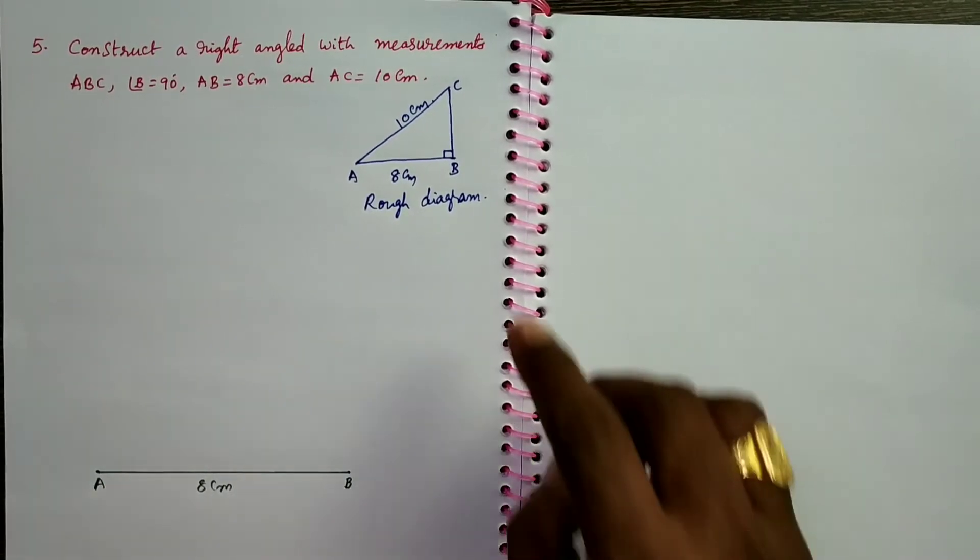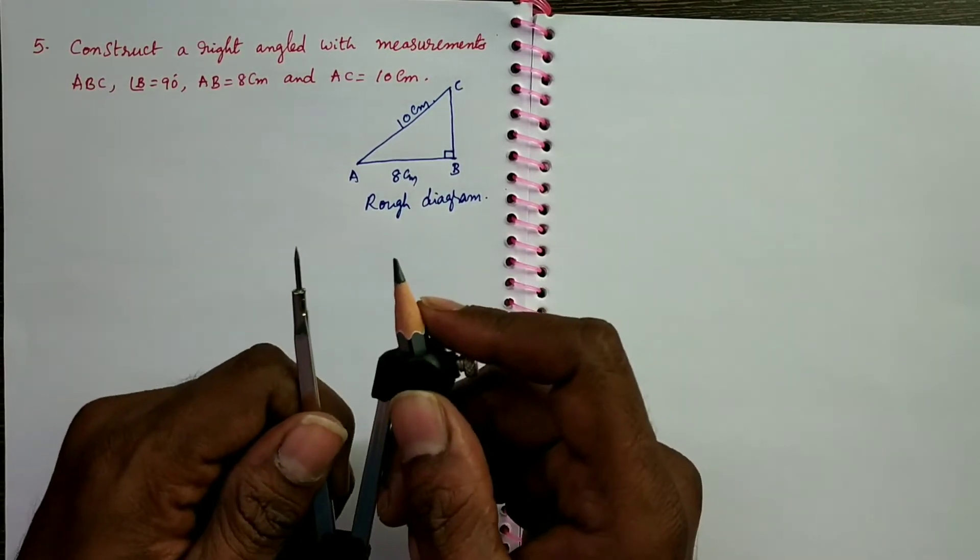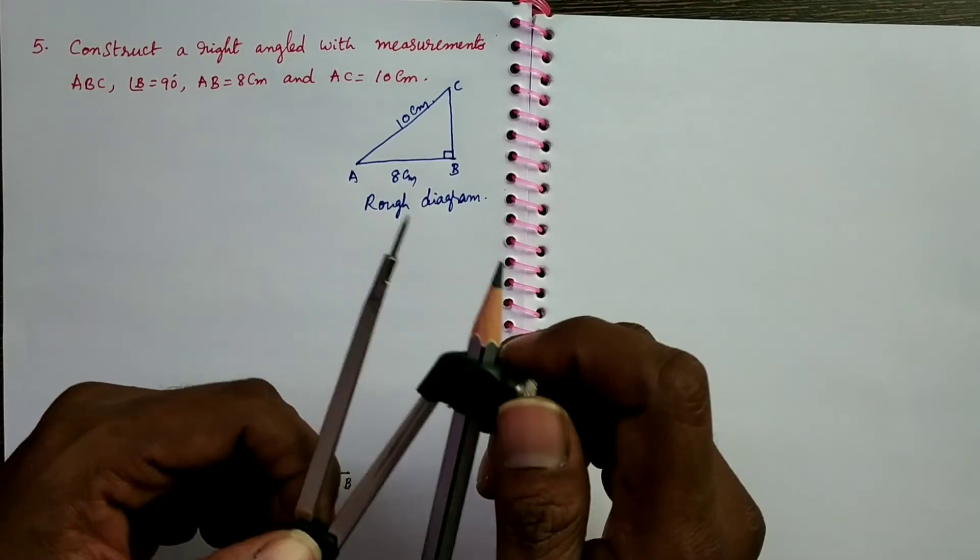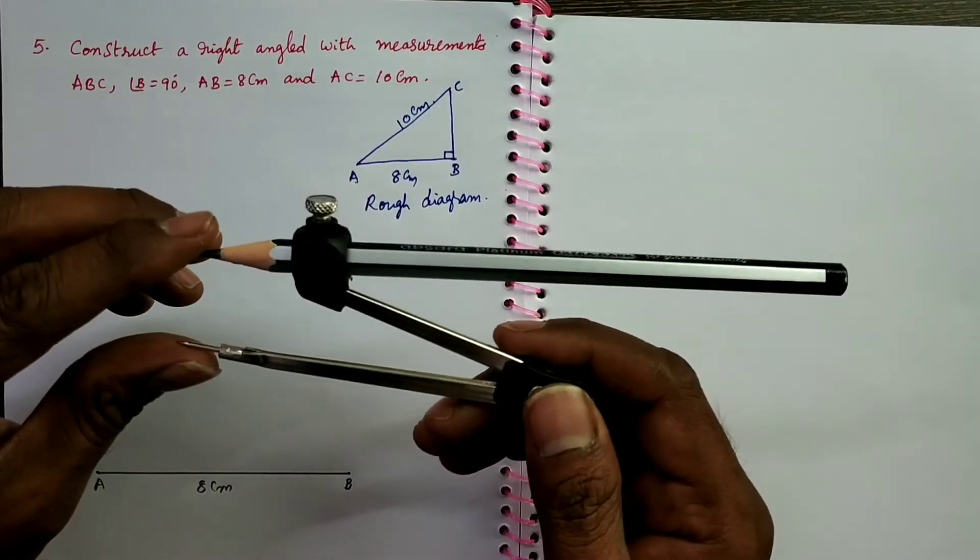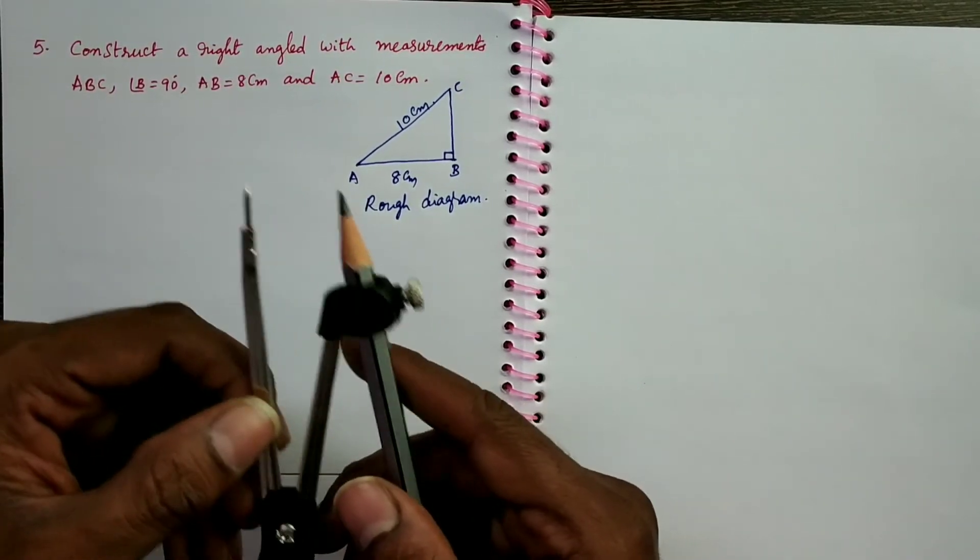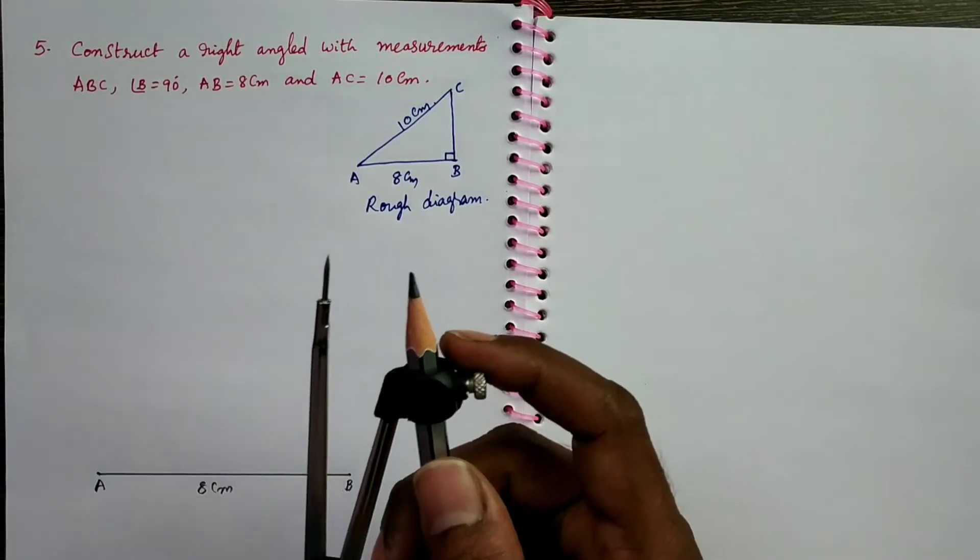Now we have to construct right angle at B. So right angle 90 degrees is a standard angle. We can construct without using protractor also, by using compass we can construct 90 degrees. So take this compass, this is the average measurement, no need to measure with scale.